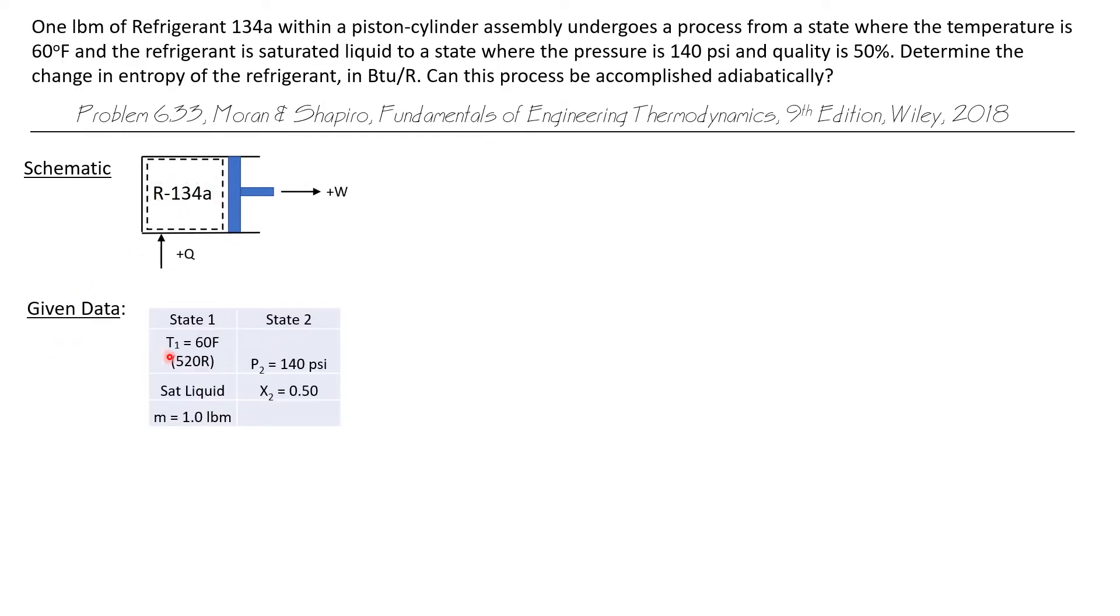Now the given data can be summarized as: state one has a temperature of 60°F which is 520°R, it's a saturated liquid and it has a total mass of one pound mass. State two has a higher pressure, it's 140 psi, and the saturated liquid has become a saturated mixture with a quality of 50%.